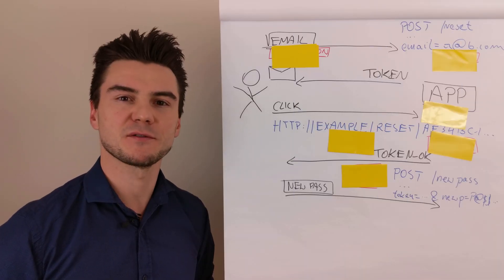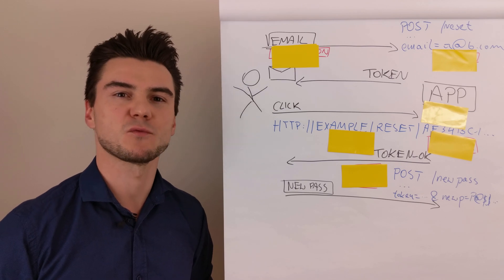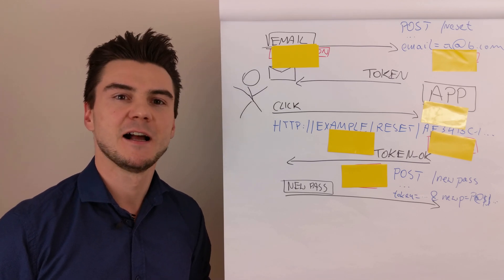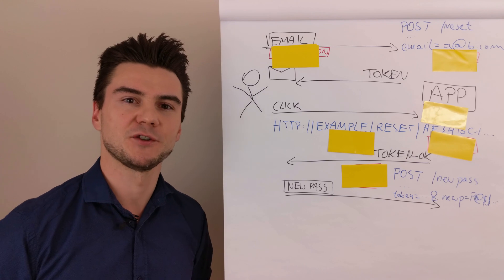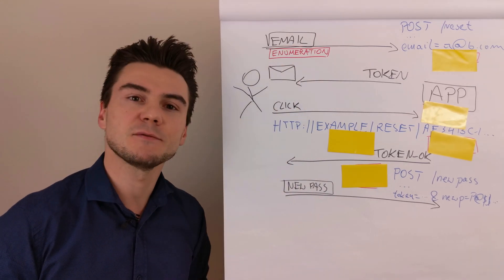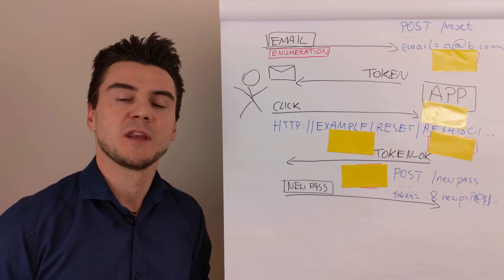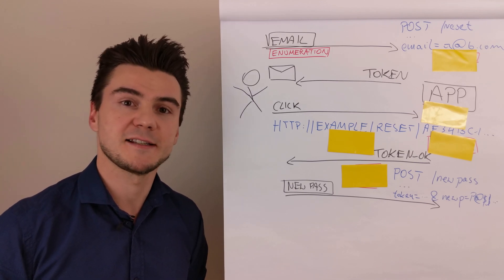In the first step, there is a post request to the slash reset endpoint with just one parameter email address. I can think of at least two payloads here. One is enumeration. If the system responds differently for an existing account and a non-existing account,